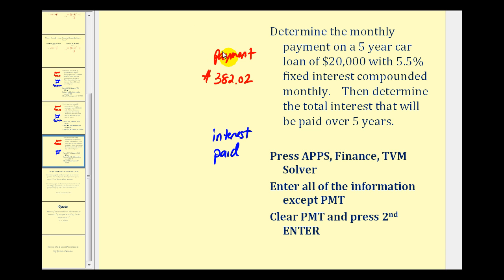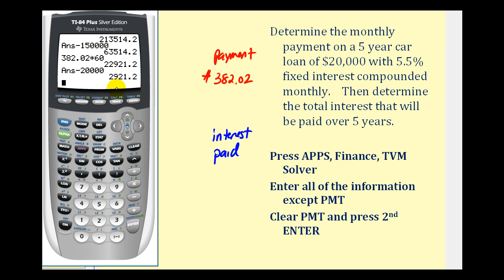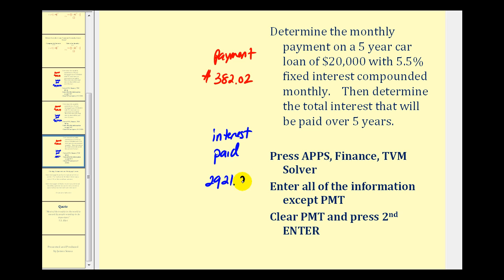To determine the total amount of interest paid, we multiply our monthly payment times 12 times 5, or just $382.02 times 60. This is the total amount paid; then we subtract out the loan amount of $20,000. So over the five-year period, we would pay $2,921.20 of total interest. I hope you can take advantage of this tool on the graphing calculator to gather all the information you need before taking out a loan. Thank you for watching.